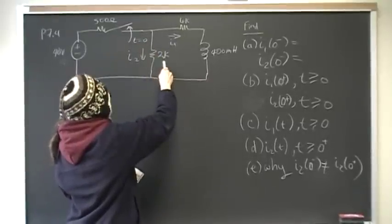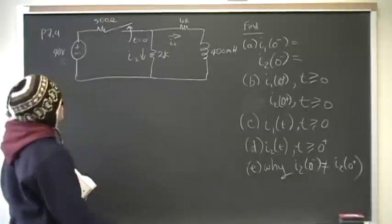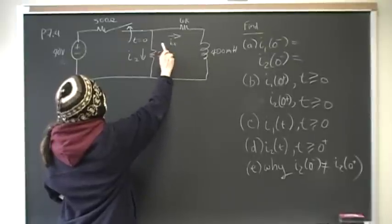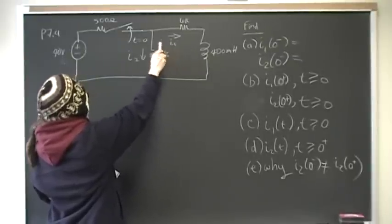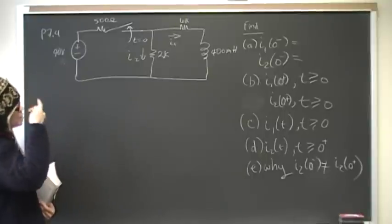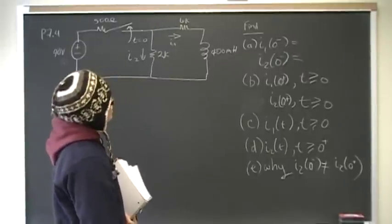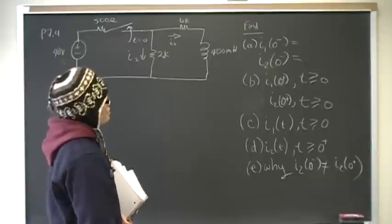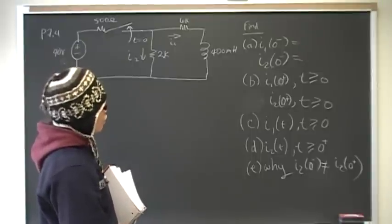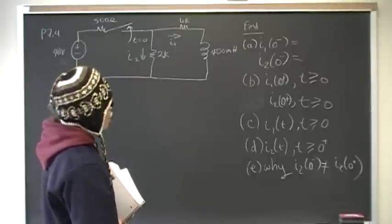We have a 2 kilohm resistor and a 6 kilohm resistor in series with a 400 millihenry inductor. The current through the 6 kilohm resistor is I1, and the current through the 2 kilohm resistor is I2. For part A, we want to find I1 and I2 right before the switch opens. In part B, we're looking for both branch currents right after the switch opens.